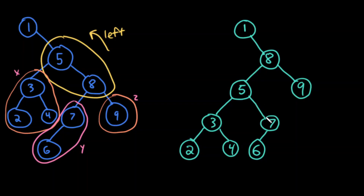So I have successfully conducted a left rotation of this tree at these two nodes. To reiterate: eight became the parent, five became the child, the left subtree of five and the right subtree of eight remained unchanged, and the Y subtree went from being the left child of eight to now being the right child of five.